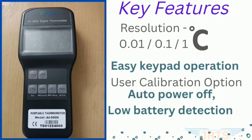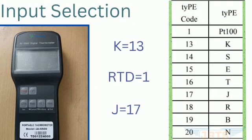This thermometer allows you to select 0.01, 0.1, and 1 degree resolution. It's a user friendly thermometer. Manual calibration is also available. Different codes are available for RTD and thermocouple types, and we need to select the code based on the input — for example, RTD is code 1 and K-Type is code 13.